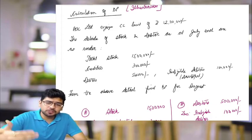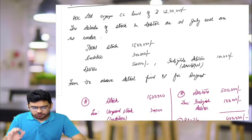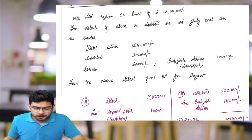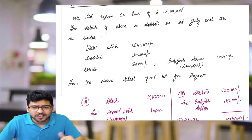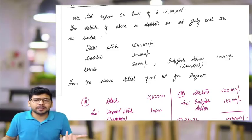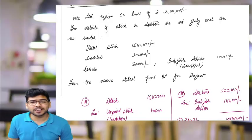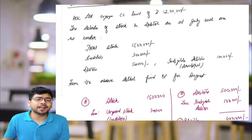statement with respect to stock and debtors. They have shown in the statement that their total stock is 15 lakhs, creditors is 3 lakhs, debtors is 5 lakhs, and ineligible debtors - some debtors might be doubtful - is 1 lakh. So now how is the bank going to